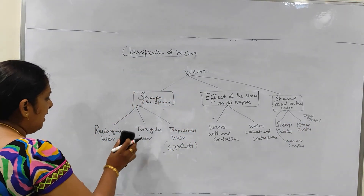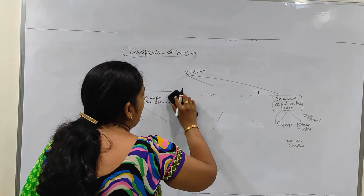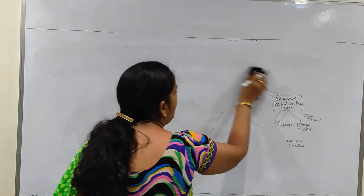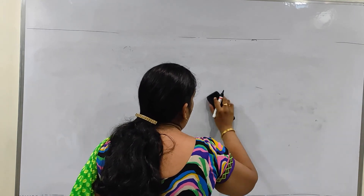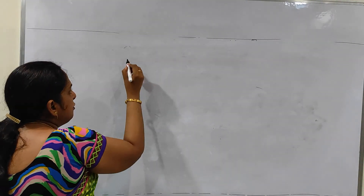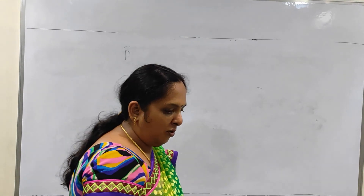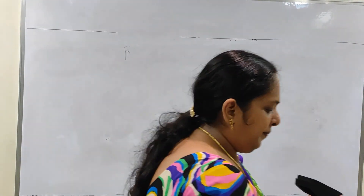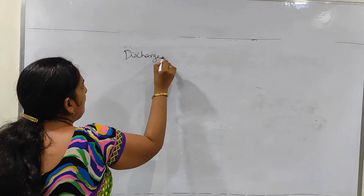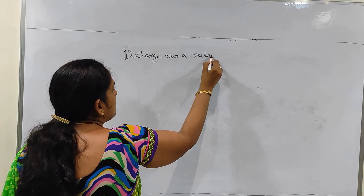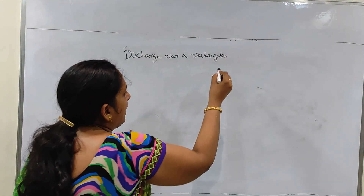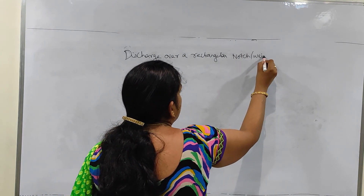Now what we are going to see is the discharge over this notch and weir — how to calculate the discharge over the weir and notch. The equation is the same for both cases, notch as well as weir. We have only one derivation, applicable for both. We are going to see the discharge over a rectangular notch. We have three cases: rectangular notch, triangular notch, and trapezoidal notch.